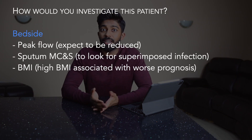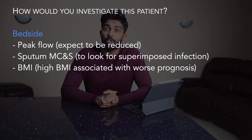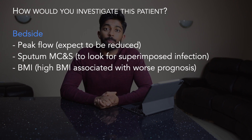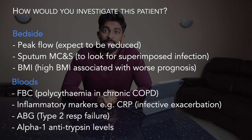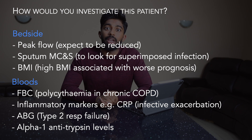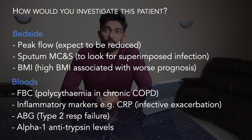Moving on to how you would investigate this patient. I'd start with some simple bedside tests, such as a peak flow, which I'd expect to be reduced in COPD. I'd also do a sputum MC&S to look for signs of a superimposed infection, and check the patient's BMI, as a high BMI is associated with a worse prognosis. For blood tests, I'd request a full blood count to look for polycythaemia, check inflammatory markers such as CRP for infective exacerbation, do an ABG expecting type 2 respiratory failure, and check alpha-1 antitrypsin levels.